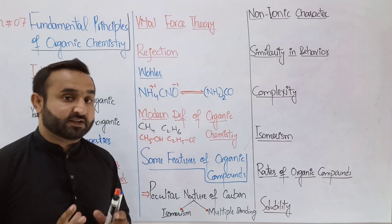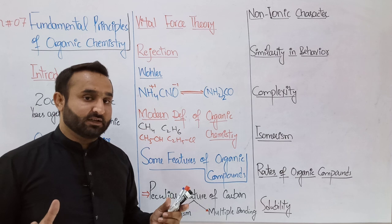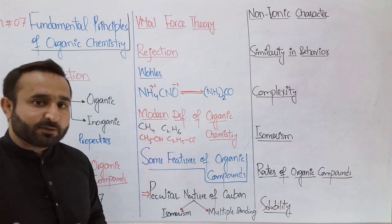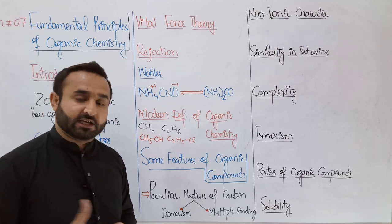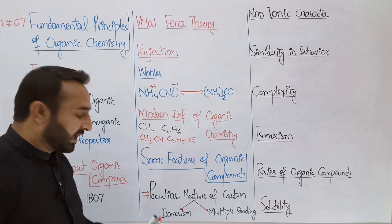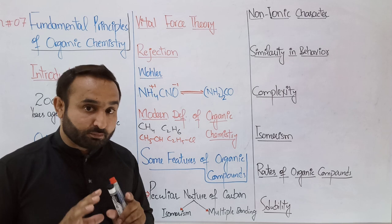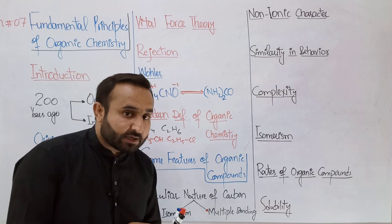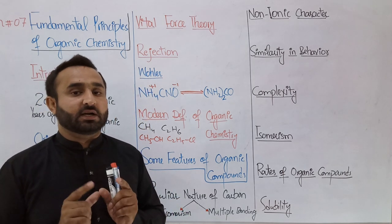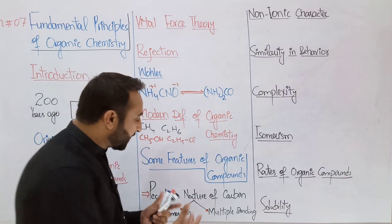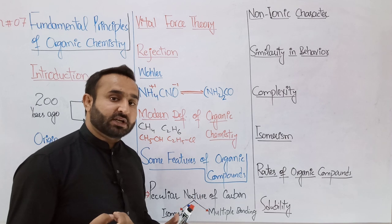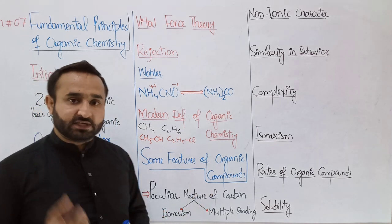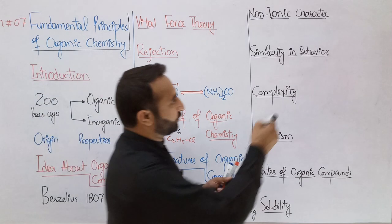Some special features of organic compounds: first, the peculiar nature of carbon. Carbon's nature is specific and different from others. Number one: carbon shows isomerism. Isomers are molecules or compounds having the same molecular formula but different structural formula. This phenomenon is called isomerism. Carbon compounds are the most abundant — the number of carbon compounds alone exceeds all compounds of the remaining 117 elements on earth. The main reason for this is isomerism.